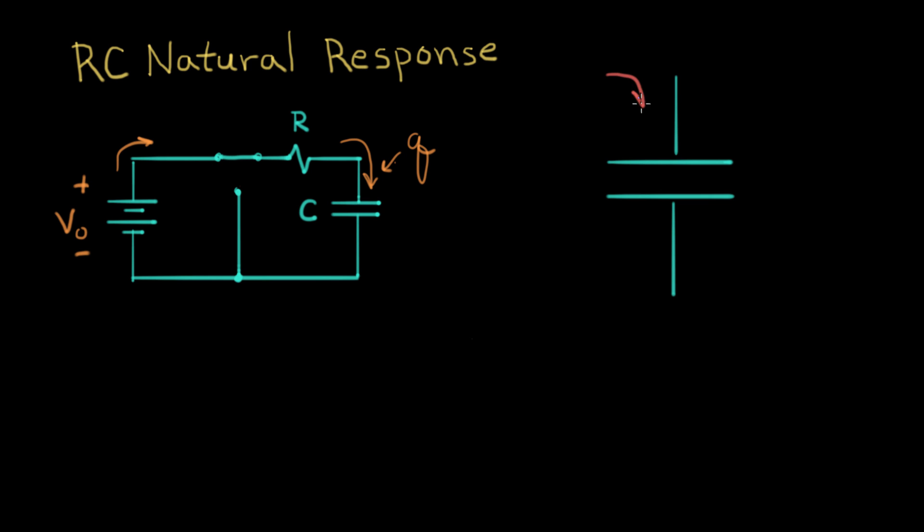As charge flowed in here, it piled up on this side of the capacitor. And there's a corresponding negative charge that collected on the other side. This amount of charge matches this amount of charge. So that's what we mean when we say that Q, or charge, is collecting on a capacitor.